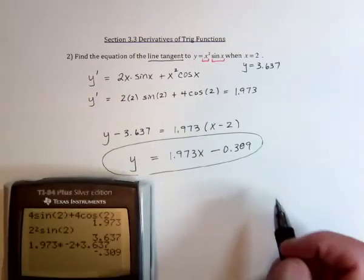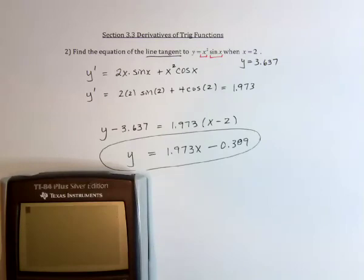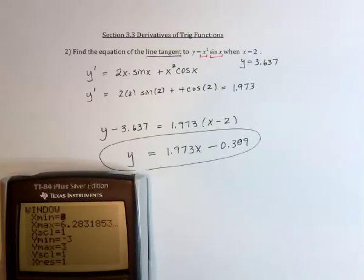And then one way to check the answer is to graph the original function, x squared, sine of x. For the window, we need to, well,